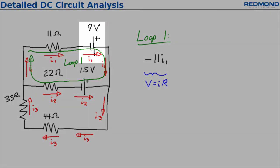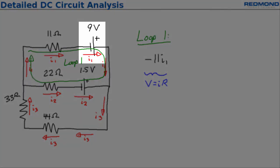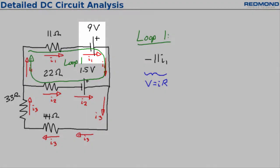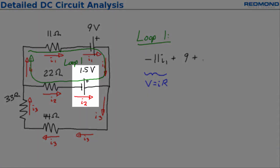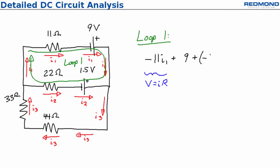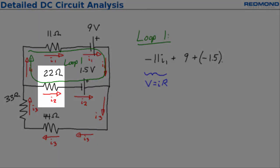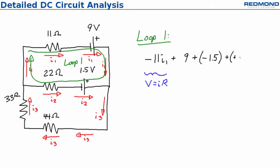Next, I encounter the 9 volt EMF going from negative to positive, so I add positive 9. After that I reach the 1.5 volt EMF and I'm going from the positive end to the negative end, so I add negative 1.5 to the equation. Finally, I pass the 22 ohm resistor and I'm going against the assumed current direction, so I add positive 22I2 to the equation. Then I reach my starting point and the equation is done. Negative 11I1 plus 9 minus 1.5 plus 22I2 is equal to 0.